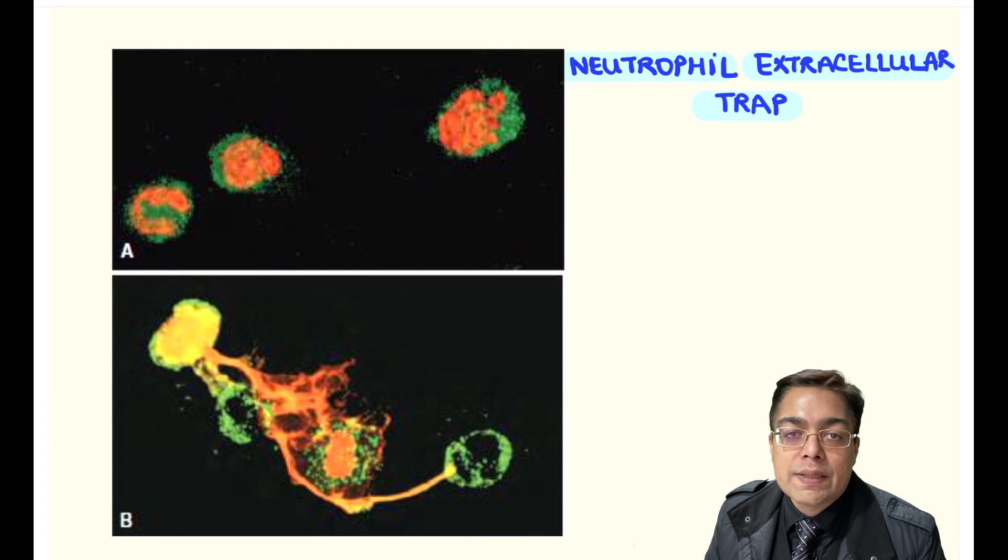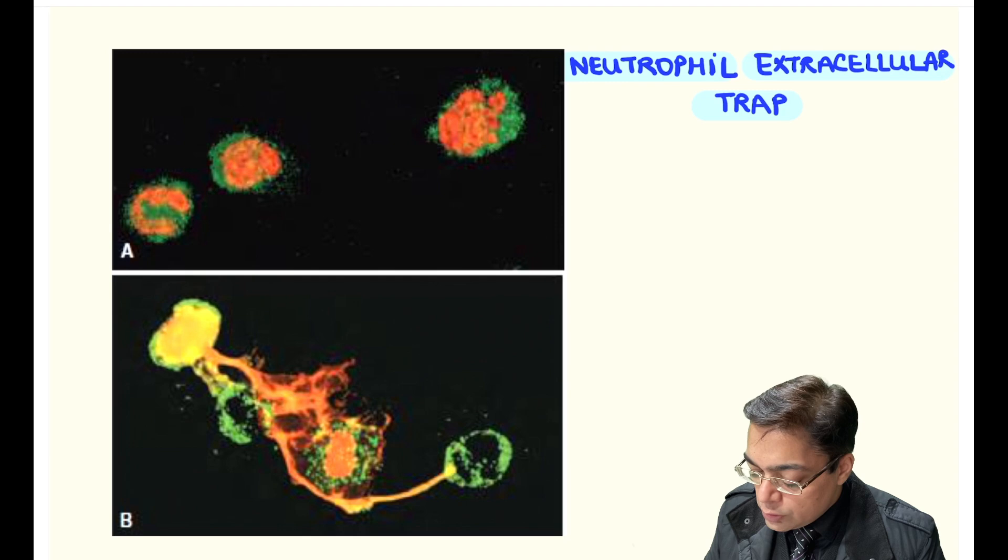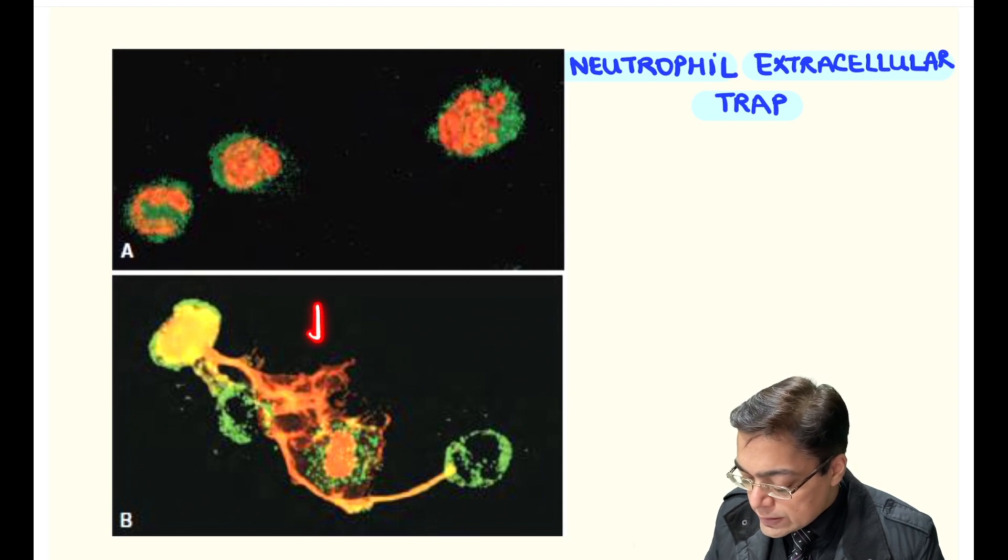Whenever there is a condition like septicemia, there is activation of the platelets followed by activation of an enzyme called arginine deiminase. This is responsible for causing decondensation of the nuclear material, which is denoted over here in the red color. This comes out of the cell and causes entrapment of the bacteria.